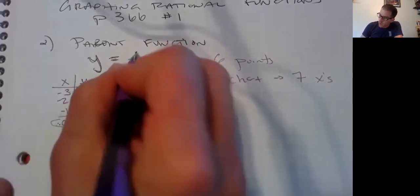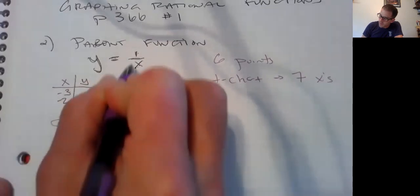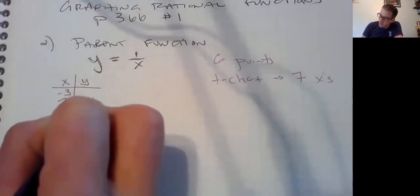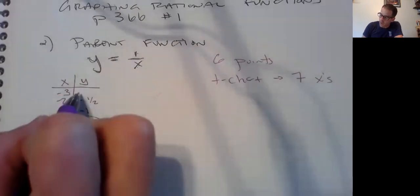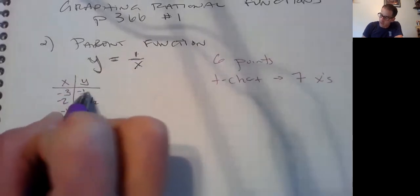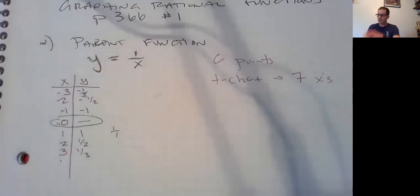Negative one. So one over negative one. One over negative two. Remember to put the negative out front, not in the denominator. And one over negative three.